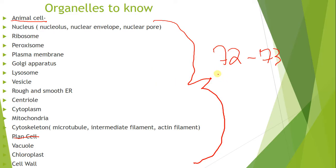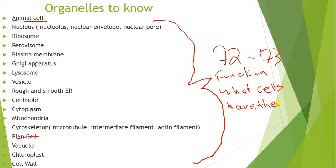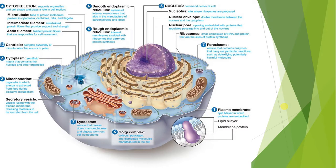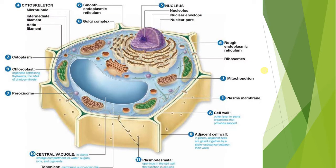I would look at pages 72 and 73 more than anything else from these sections, because what you're going to want to know is the function of each organelle and what cells have them. The numbered organelles in those diagrams are the ones you want to study and be familiar with.